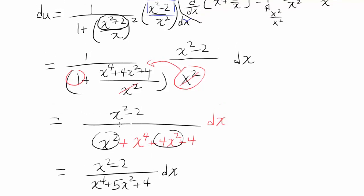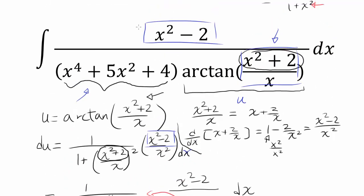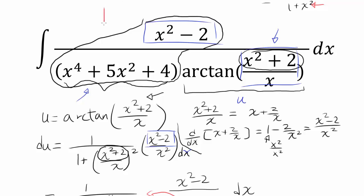Isn't this what we had? Yes, it was. We had x squared minus 2 over x to the 4th plus 5x squared plus 4 to begin with. So this entire expression is du, and arctangent of (x squared plus 2) over x is u. So we are basically done.